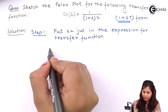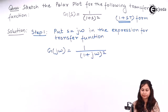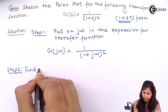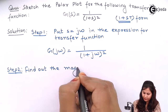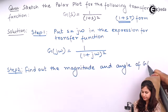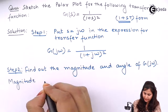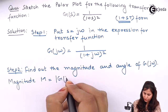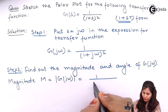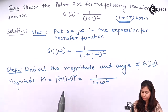So G(s) will now become G(jω) and it will be 1 / (1 + jω)². The second step is to find out the magnitude and angle of G(jω). The magnitude M is given by 1 / (1 + ω²), because of the whole square. If the whole square was not there, we would put a square root. This is the magnitude of G(jω).